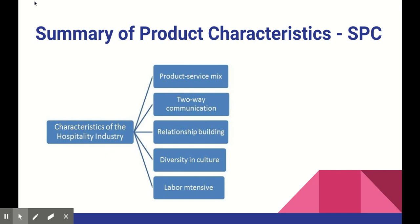Now let's look at the Summary of Product Characteristics, or SPCs. In order to commercialize any medicine, one of the documents attached to every application for marketing authorization is the proposal for a summary of product characteristics. The SPC, together with the package leaflet, constitutes part 1b of the dossier required by the authorities. This document summarizes the main characteristics of a medicinal product from different points of view — pharmacological, chemical, pharmaceutical, toxicological, and so forth. The SPC fulfills yet another communicative purpose: it is the basis of information for health professionals on how to use the medicinal product safely and effectively.